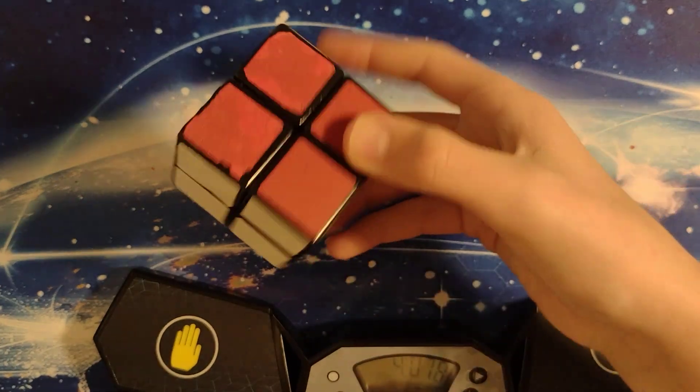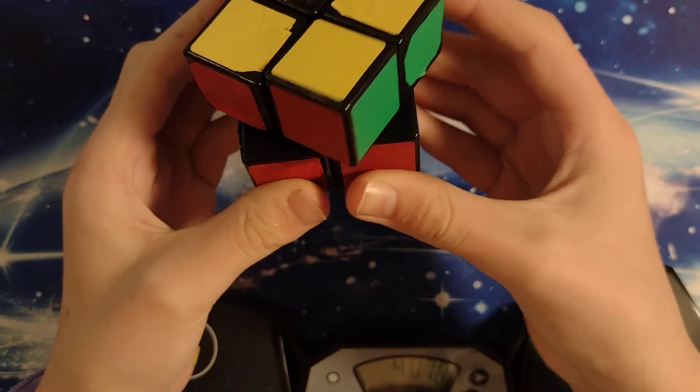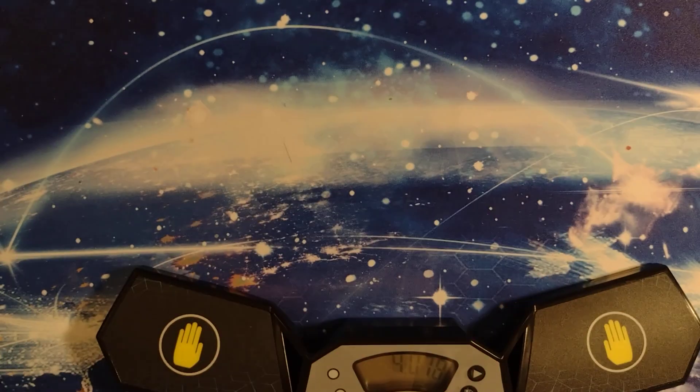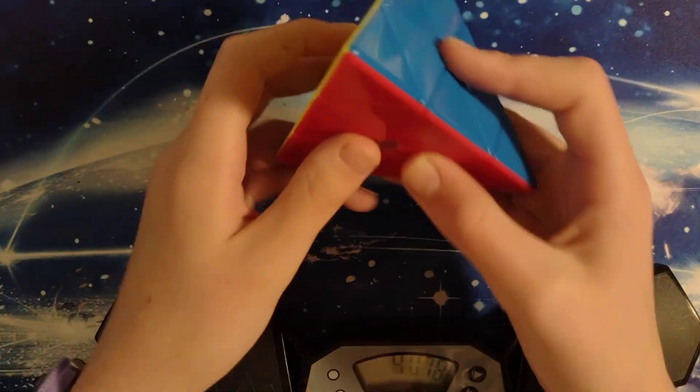4.078 was a really bad cube. Literally no corner cutting. Let's do some pyraminx.